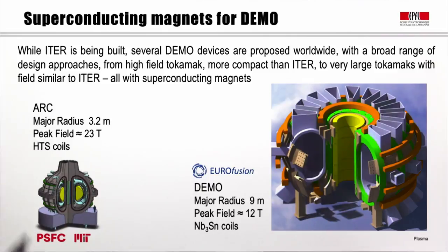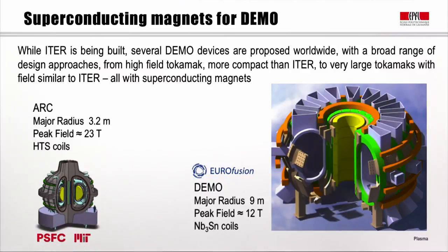One example of a high-field compact proposal is ARC from MIT, which employs high-temperature superconducting coils with a peak field up to 23 Tesla. By contrast, the European DEMO proposal has a major radius of 9 meters and a peak field of 12 Tesla using low-temperature Nb₃Sn superconducting coils. All proposals around the world for the step after ITER use superconducting magnets.